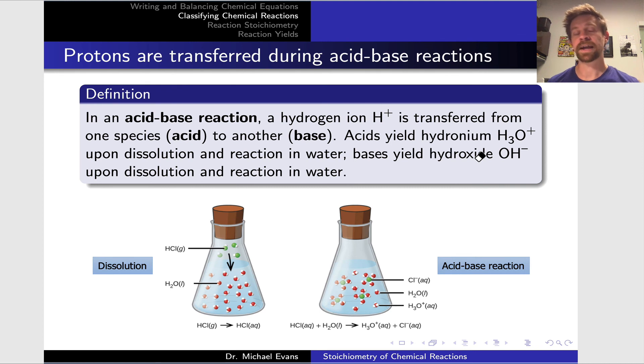In an acid-base reaction, or more specifically, a Bronsted acid-base reaction, a hydrogen ion, which we can also call a proton - if you think about the hydrogen atom, one proton and one electron minus its electron to give it positive charge, that's just a proton - is transferred from one species, which we call the acid, to another species, which we call the base.